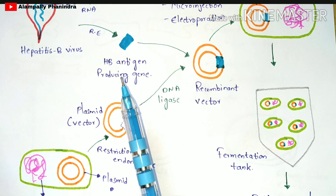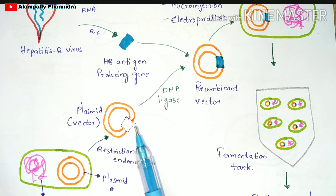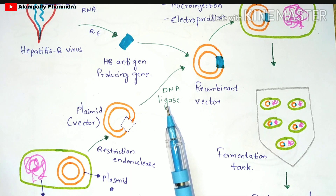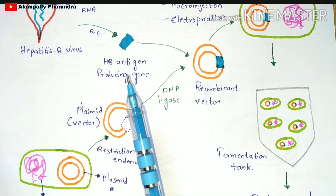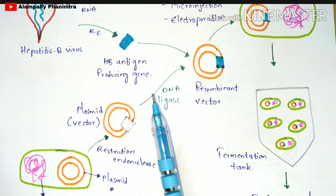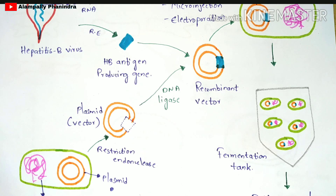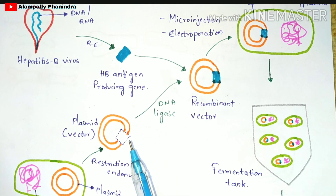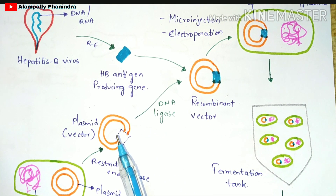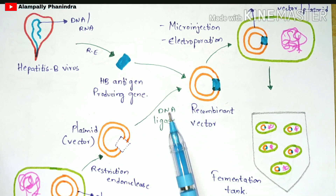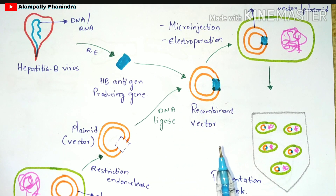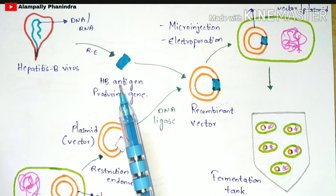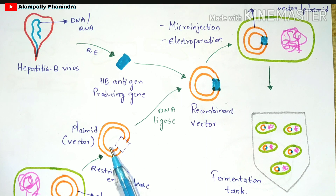Once that position in the plasmid is empty — created by the restriction endonuclease — you insert the HB antigen producing gene into this plasmid. The enzyme required to attach the HB antigen producing gene to the plasmid vector is DNA ligase. DNA ligase is the most important enzyme used to join the HB antigen producing gene to the plasmid vector.